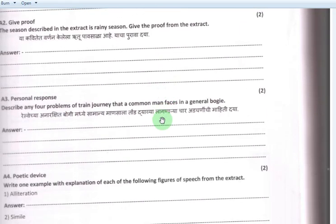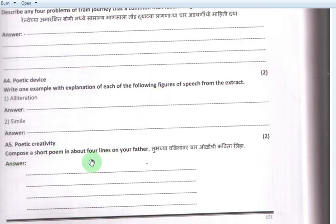A5 Compose a short poem in about four lines on your father. This is your own observation about your father. You can write four lines on your father. My answer: My father never looks for praise, he works hard all days. To serve him in the future is my passion.